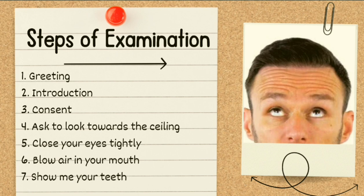Whatever your command, start your examination accordingly. First, sanitize your hands, then greet the patient, introduce yourself, and obtain informed consent. After a general look at the patient, ask the patient to look up towards the ceiling or crease the forehead, close the eyes tightly against resistance, blow air in the mouth — meanwhile look for loss of nasolabial fold — and finally ask the patient to show teeth or smile.